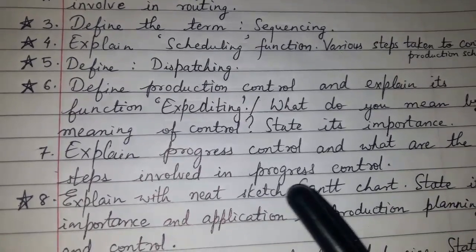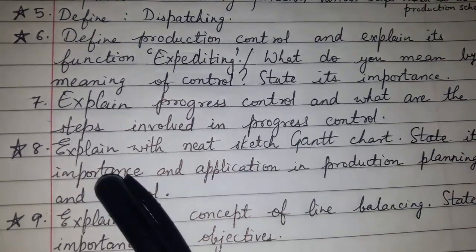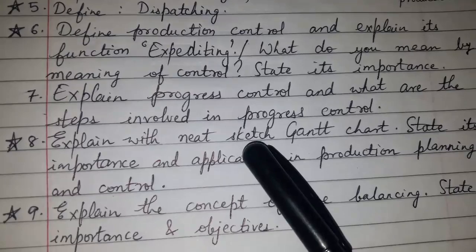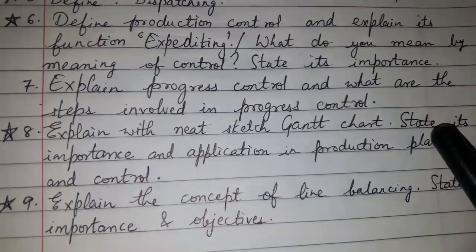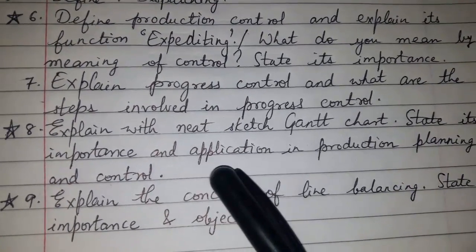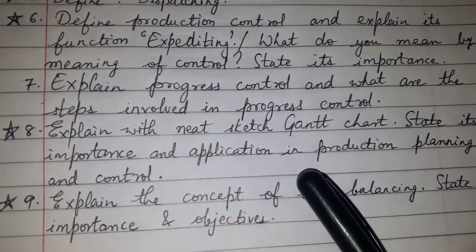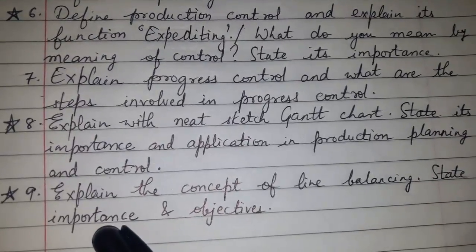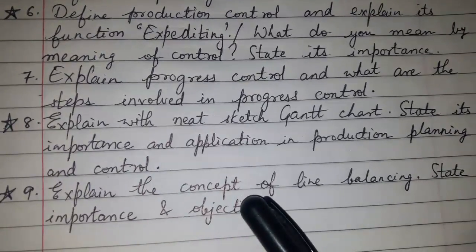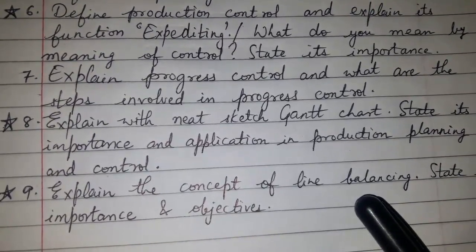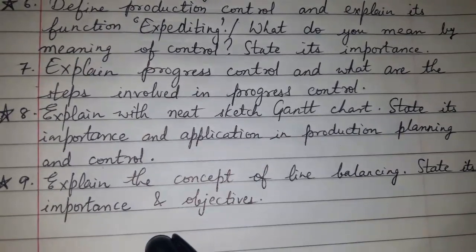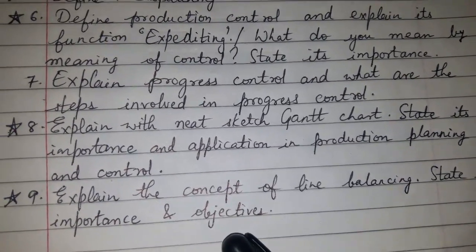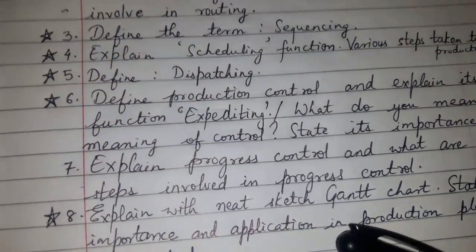Question 6: What do you mean by control? State its importance. Question 7: Explain progress control and what are the steps involved in progress control. Question 8: Explain with a neat sketch the Gantt chart, and state its importance and application in production planning and control.